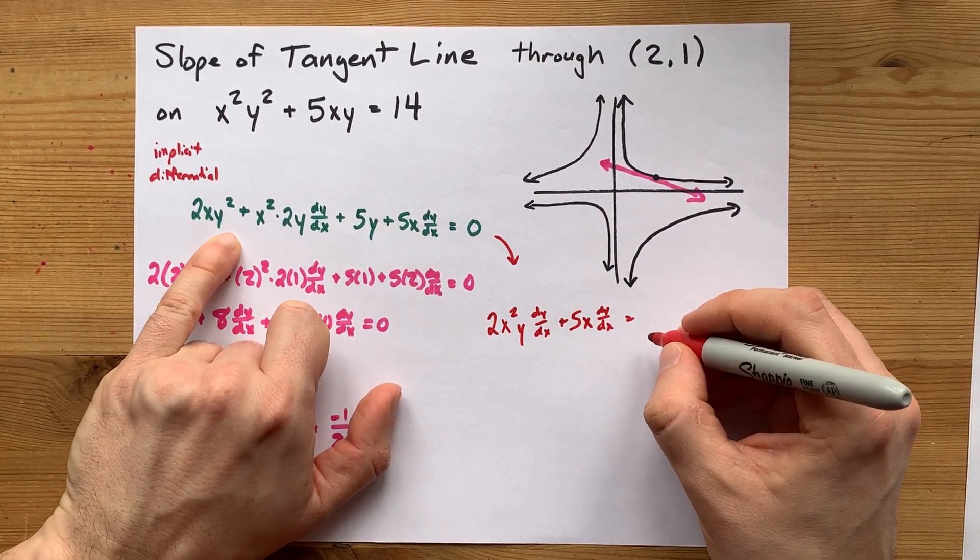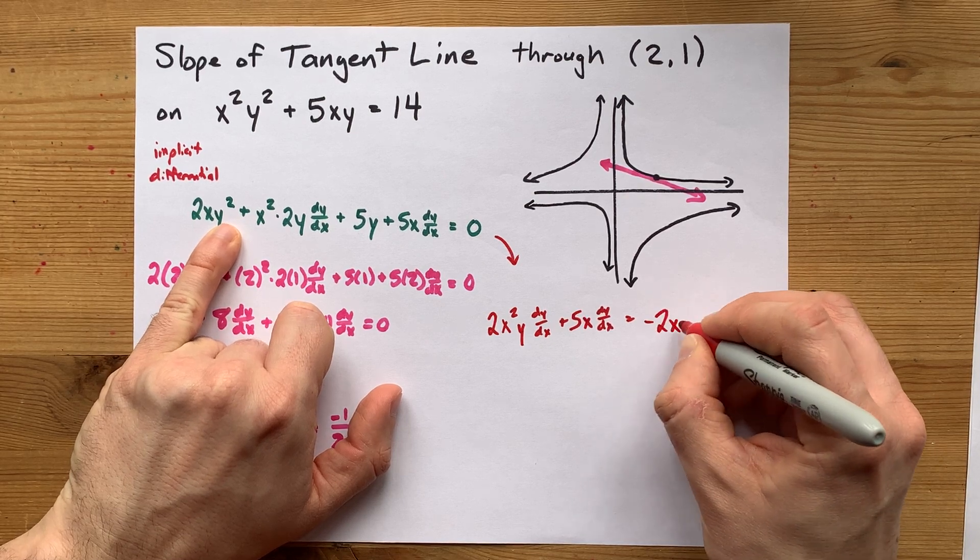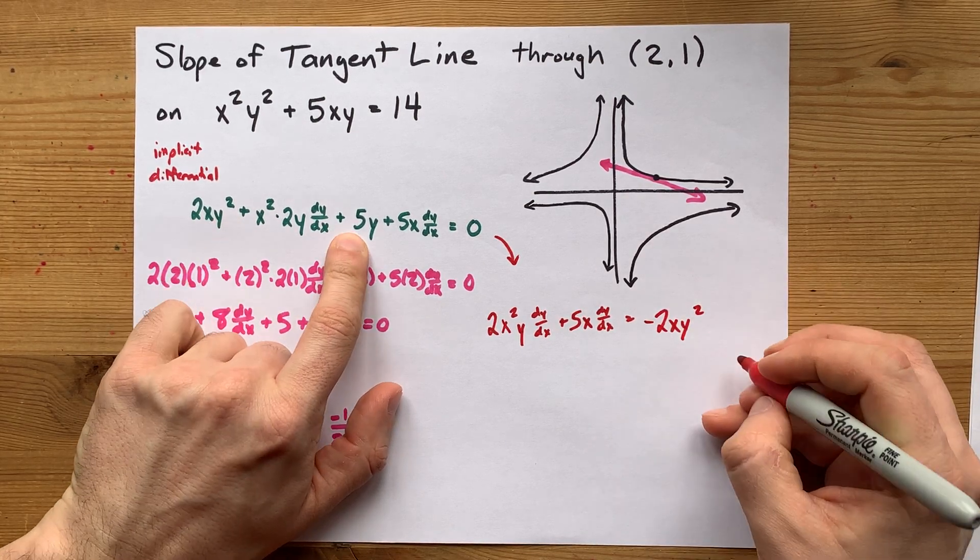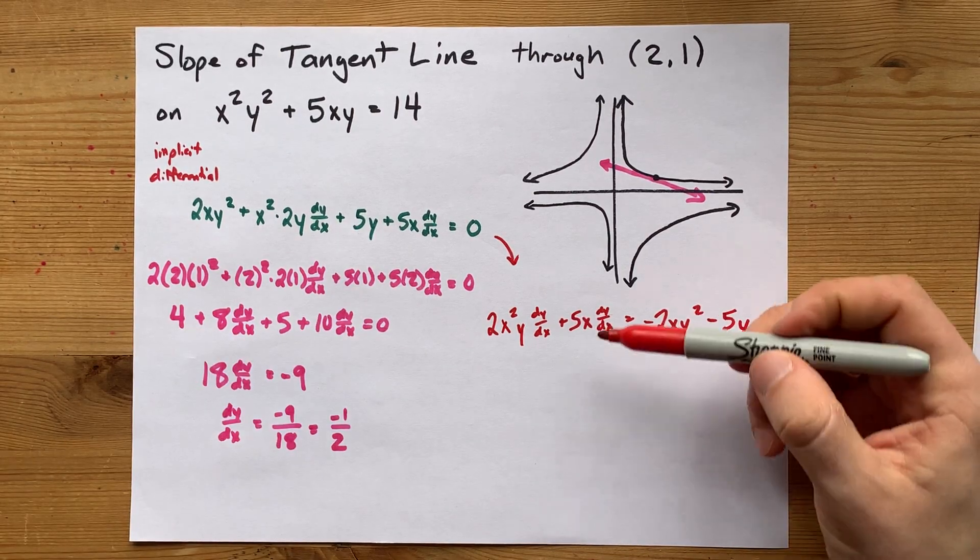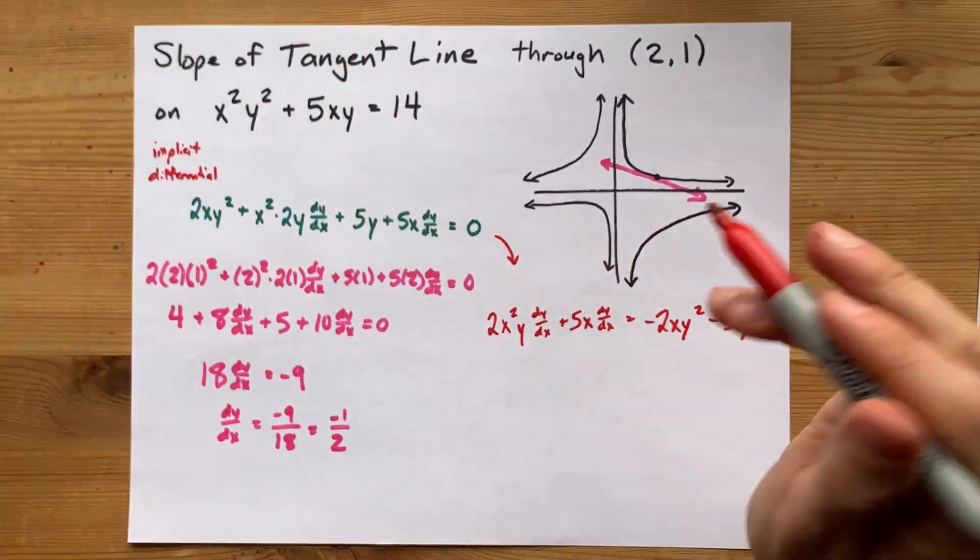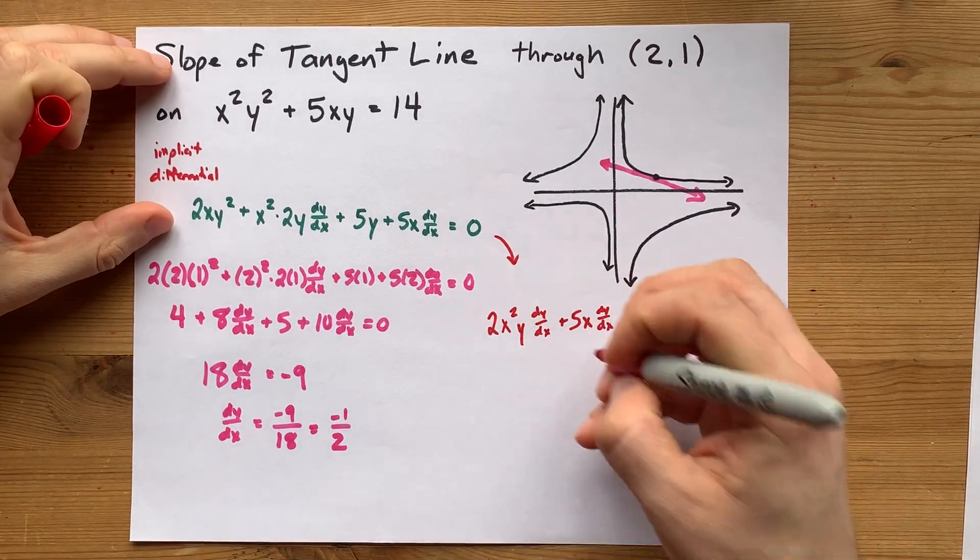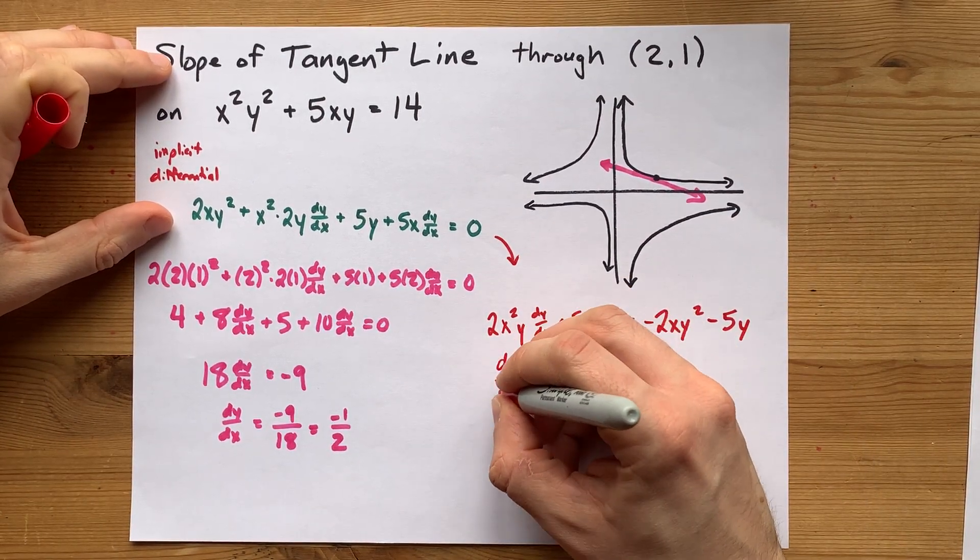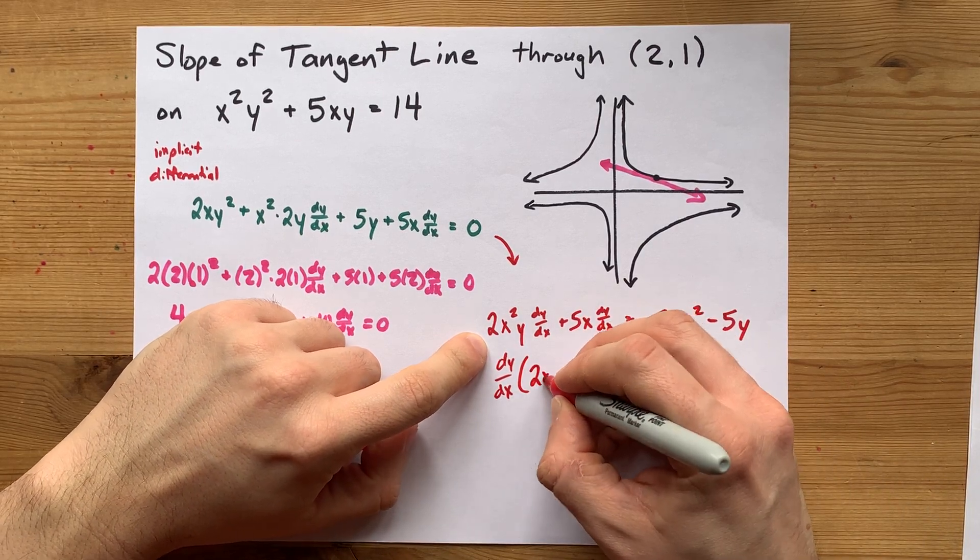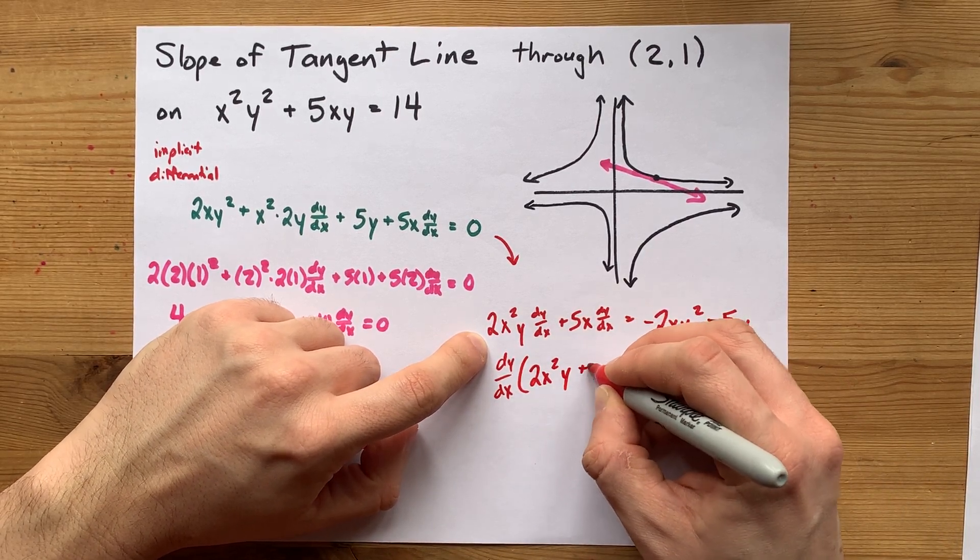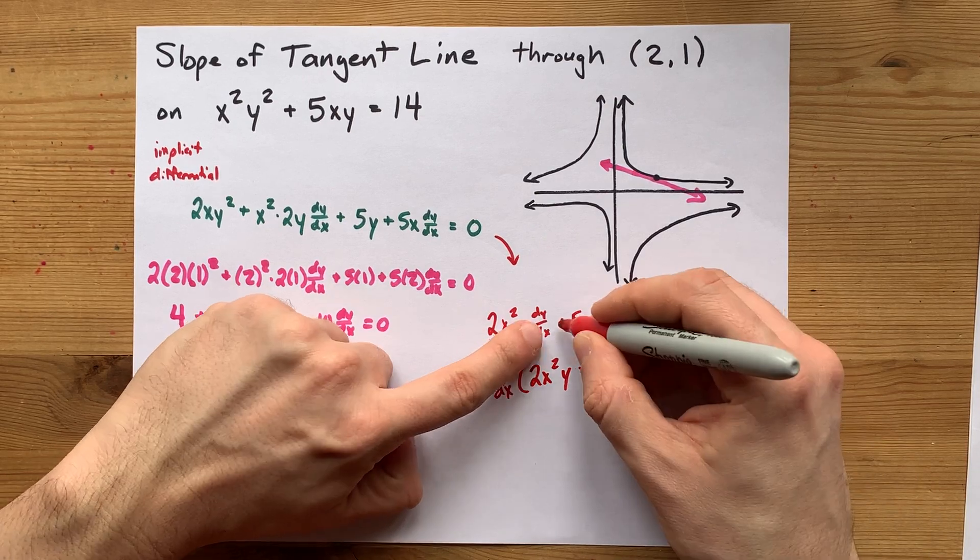And the plus 5x dy by dx stay on the left. This 2xy squared will move to the other side. And the 5y will also move to the other side. And to get dy by dx alone here, we're going to factor it out. dy by dx could be multiplied by 2x squared y plus 5x in order to give us that original.